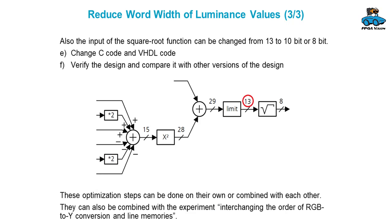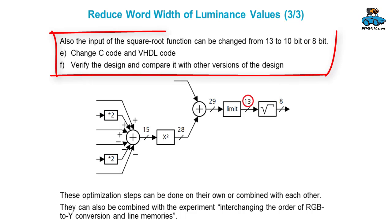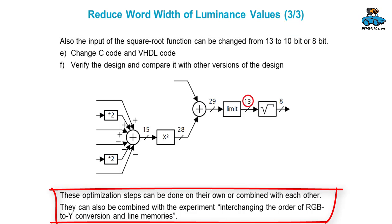Further on in the processing, you can also reduce the word width after the limiting, before taking the square root. We have 13-bit and this can be reduced to maybe 10-bit or 8-bit. Again, change the C code and the VHDL code, verify the design, and compare resource usage and power consumption with other versions. All these optimization steps can be done independently on their own or you can combine them.